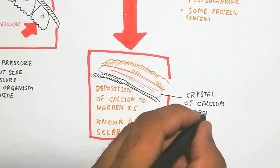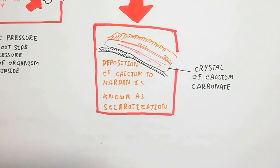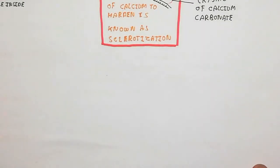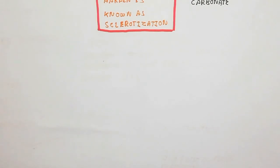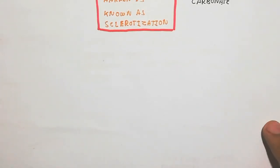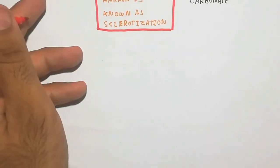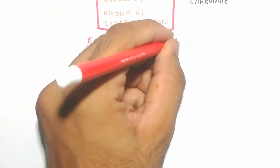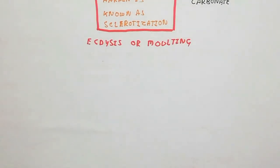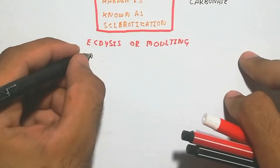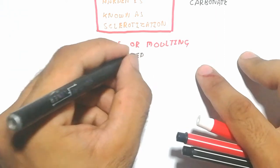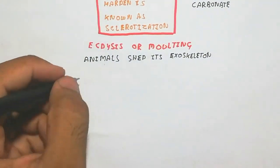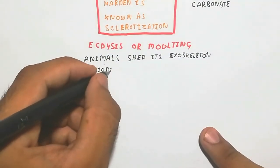The periodic shedding of the exoskeleton is known as ecdysis or molting. Ecdysis involves enzyme and hormone use throughout one cycle. The animal sheds its exoskeleton periodically and it is replaced by a larger exoskeleton. A new epicuticle is produced, and the animal sheds its old exoskeleton and replaces it with a larger skeleton via a new procuticle.